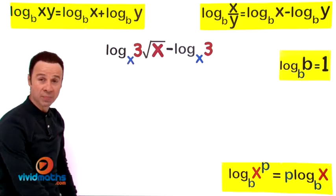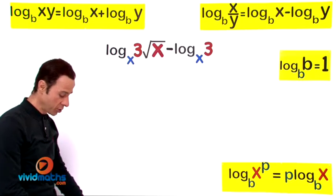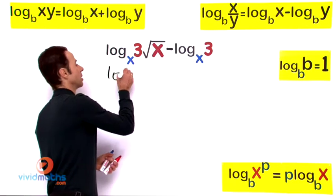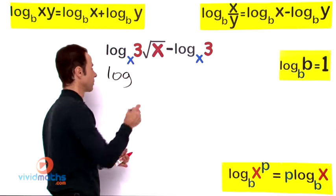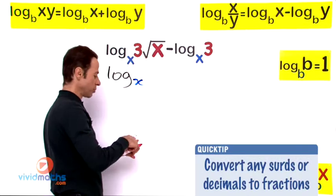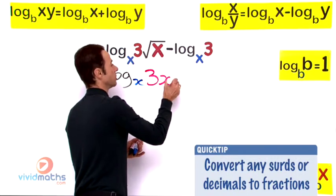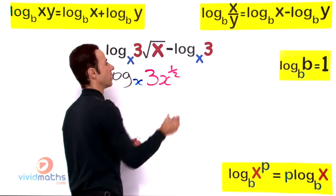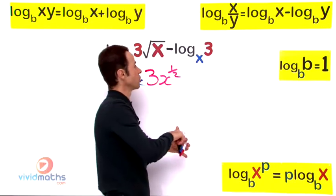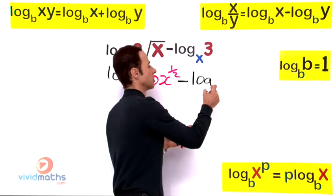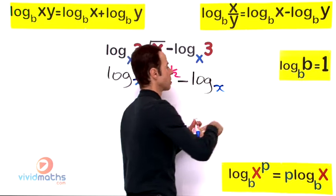So let us jump in and do this. The first thing I am going to do is rewrite the front part with the log, so let us write log base x. Now this will be simplified as 3x to the power of 1/2, and then we are going to subtract log same base which is x to the 3.